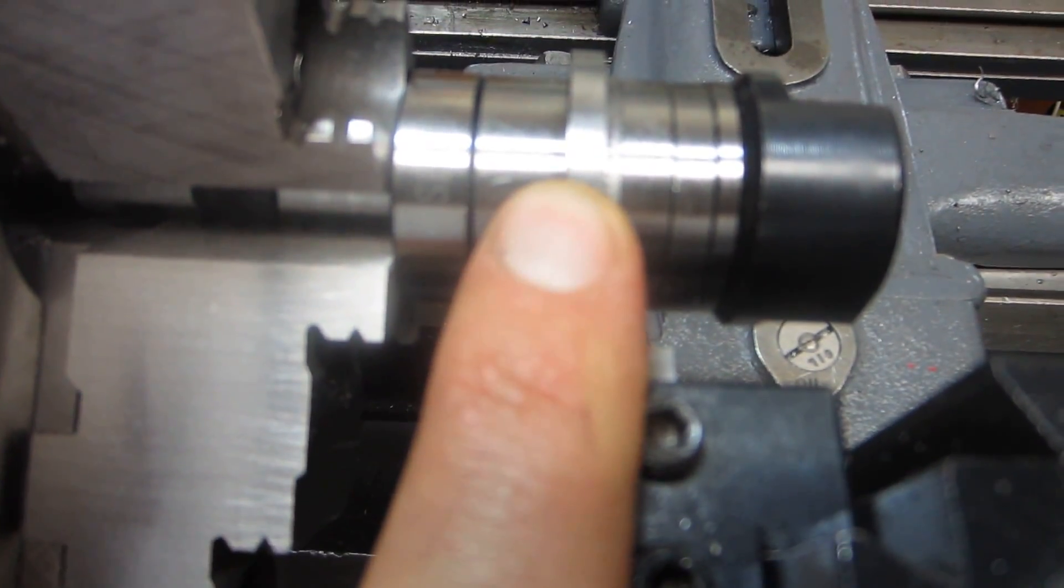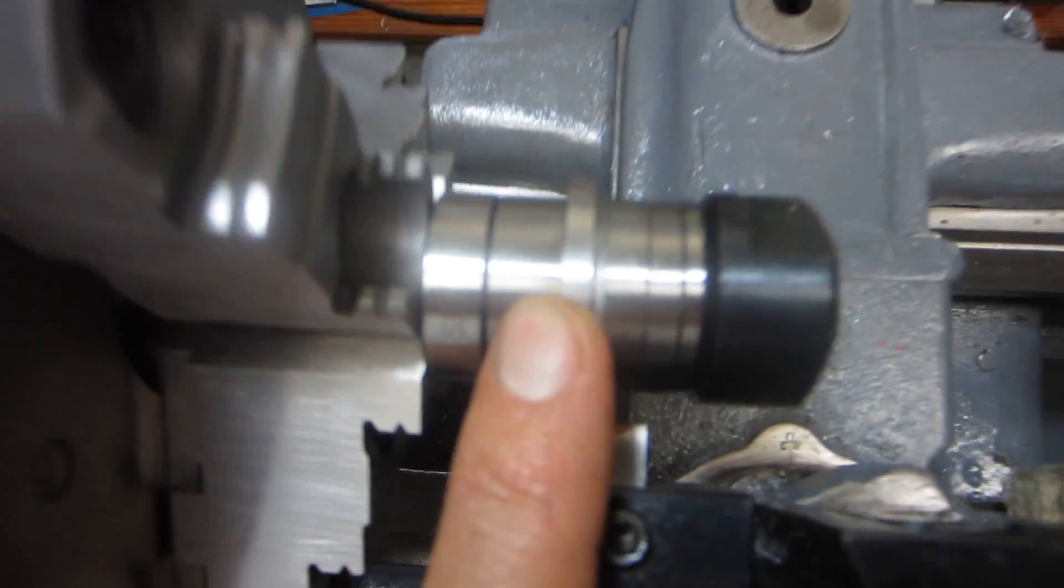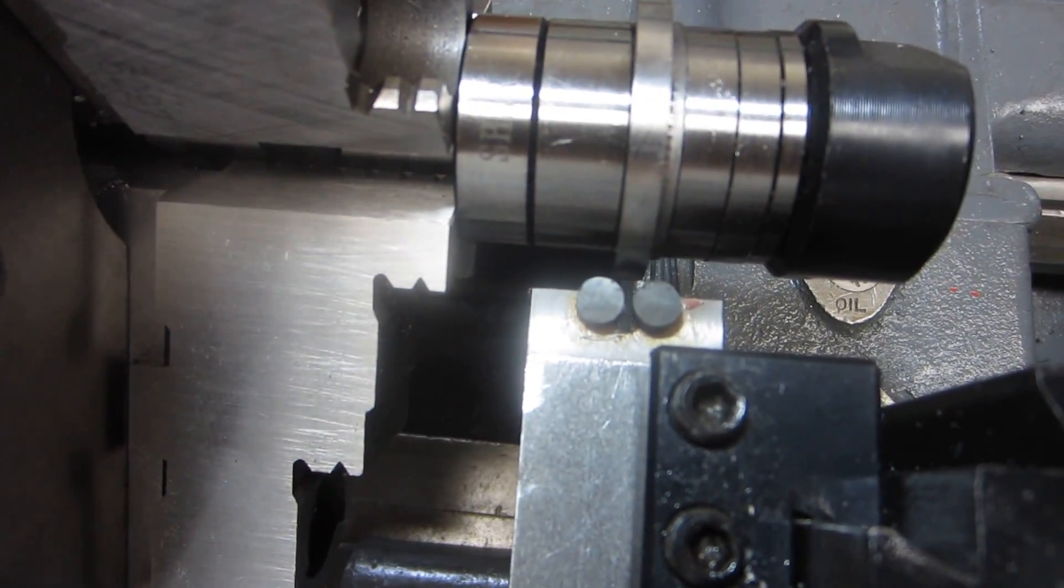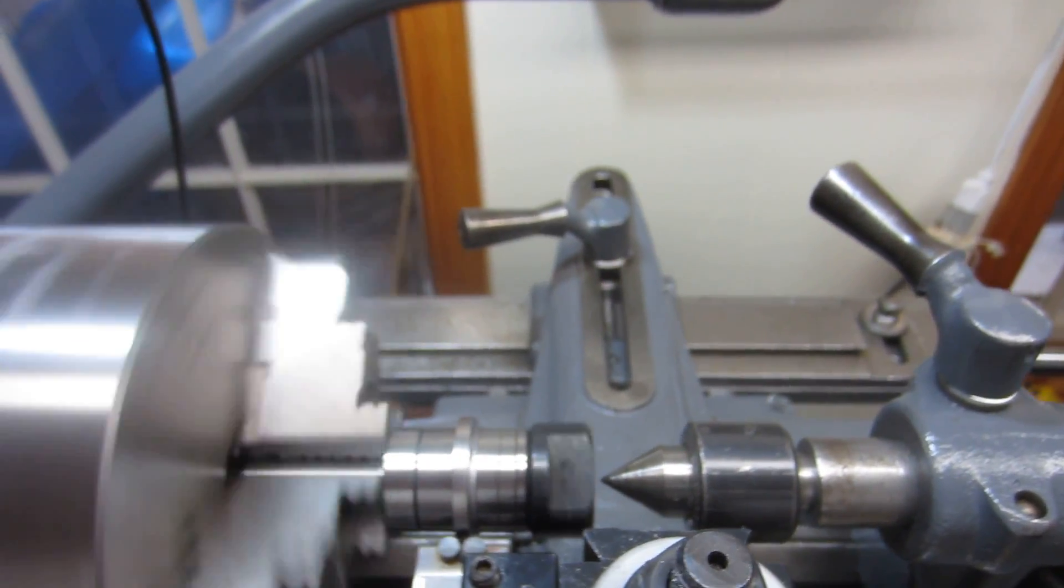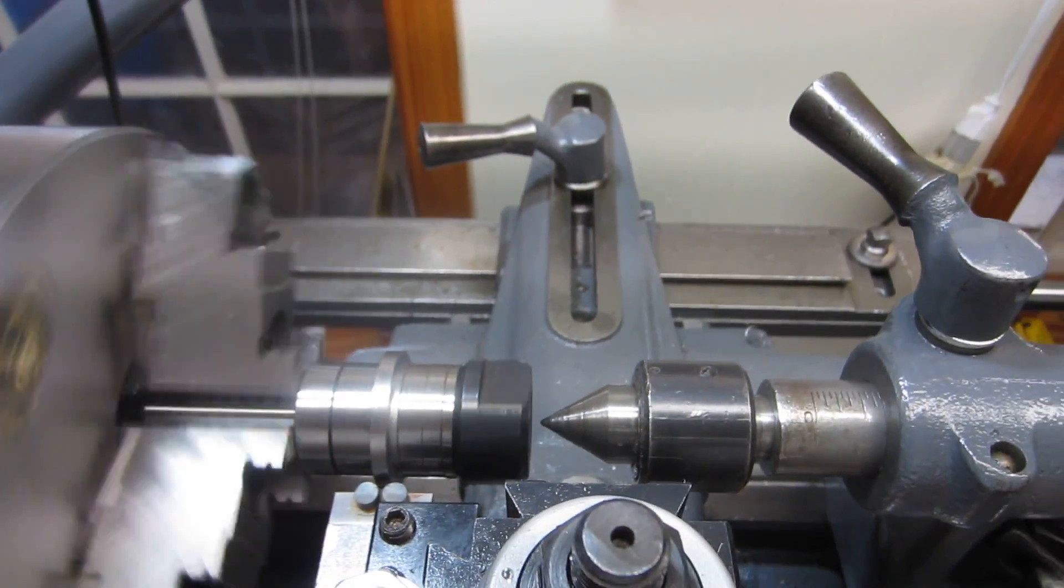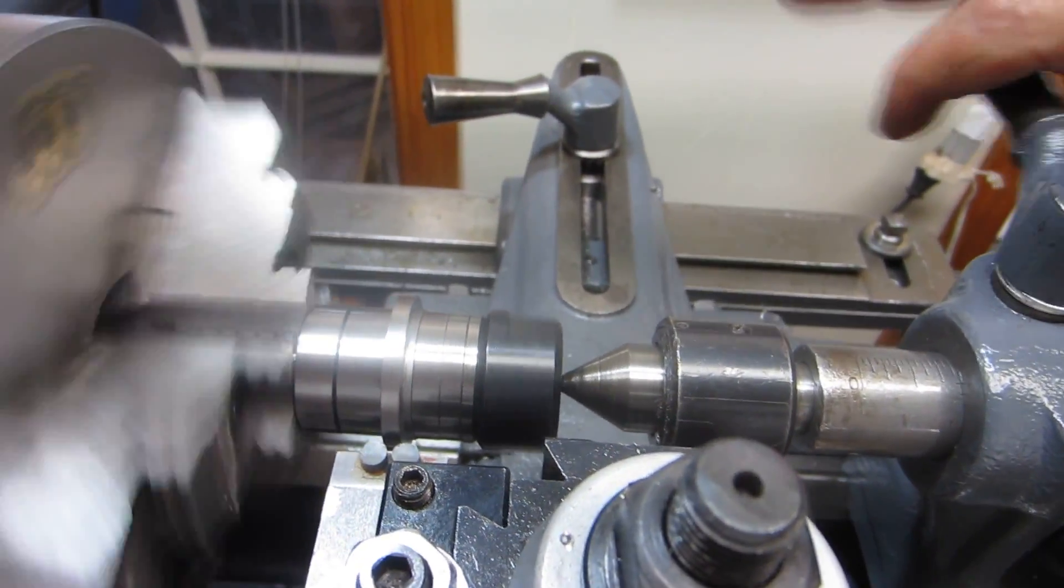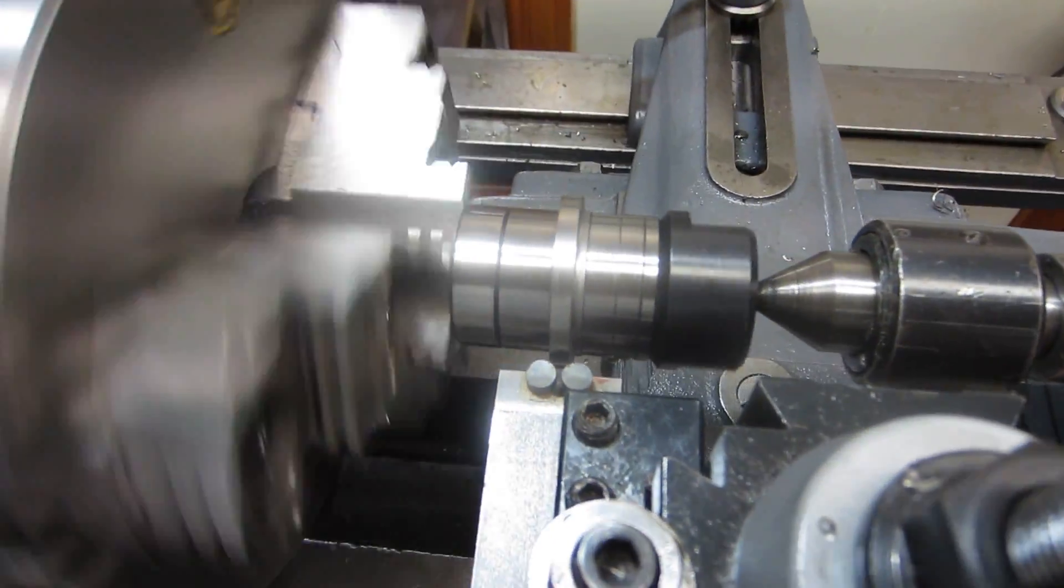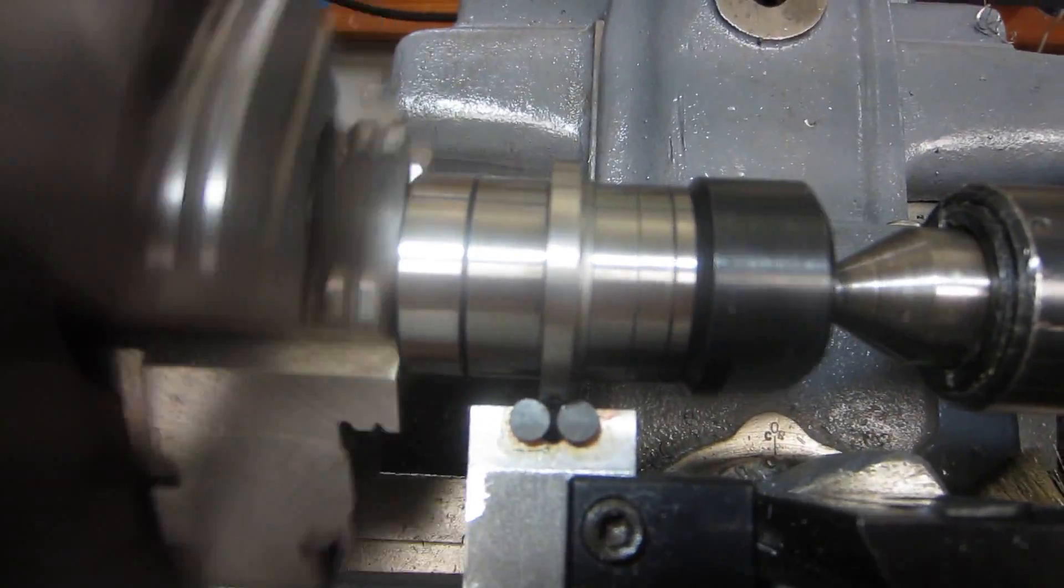This poor camera just can't focus sometimes. It tries really hard, but I wish I could do a manual focus on it. Oh, I forgot to move the tail stock in. It's my live center. Got it like that. Bring that in, and tighten it down. Lock it in. Alright, that's going to help. I think we got it roughly centered and now we're going to cut.